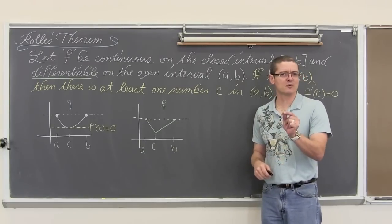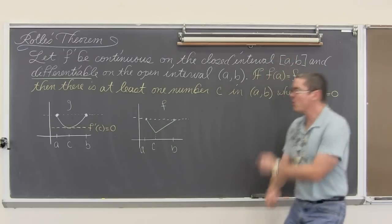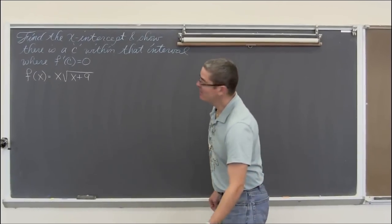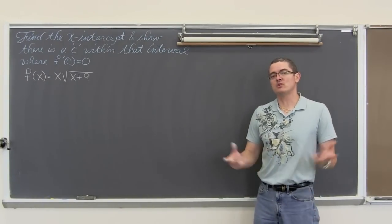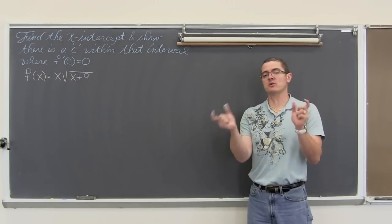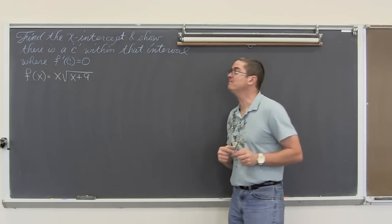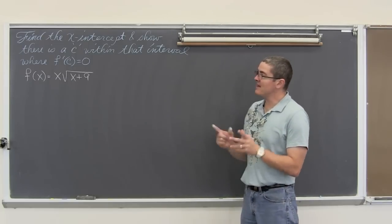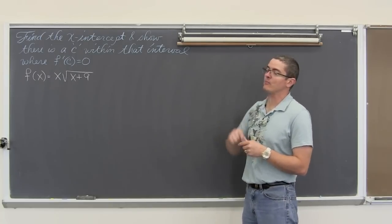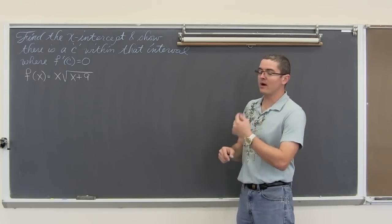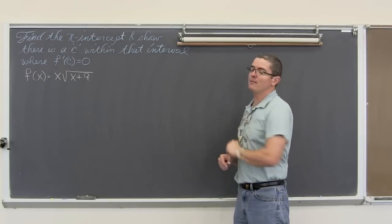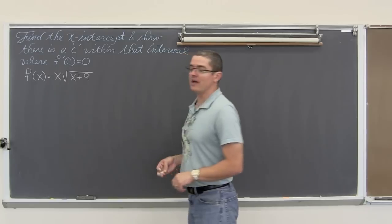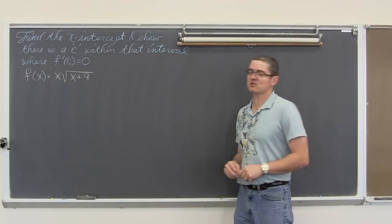Let's look at those examples. One is going to be algebraic, and one is going to involve trig functions. So here is our example. We have find the x-intercepts, which means that we are going to find two x-values where the y-value is equal to zero, so there is your horizontal secant line, and show that there is a value of c within that interval that we find in the first step where we find the x-intercepts, that contains or where f'(c), where the derivative, the first derivative is equal to zero. And we have f(x) is equal to x times the square root of x plus nine.